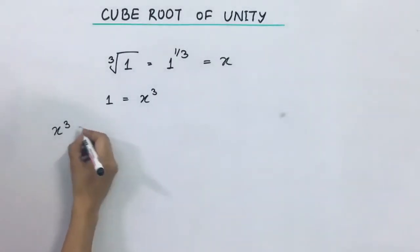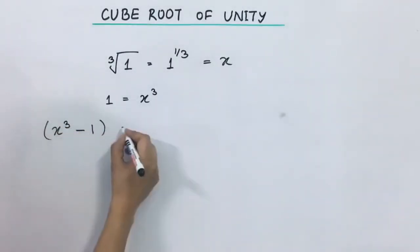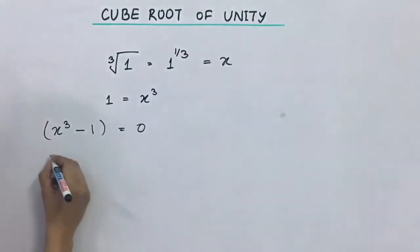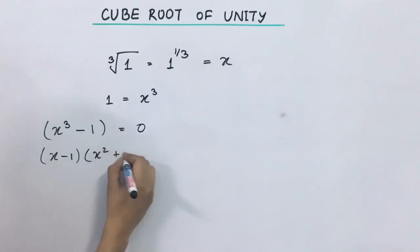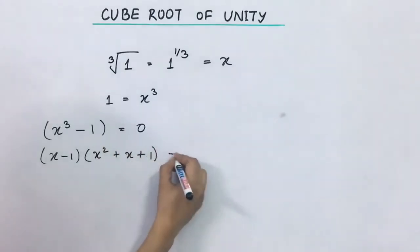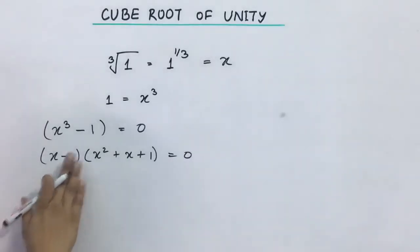Isse hum lik sakte hain x cube minus 1 equal to 0. Now if we find its factors we will get x minus 1 into x square plus x plus 1 equals 0.